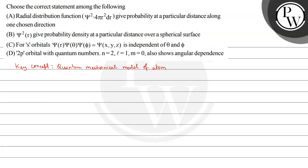The first statement says: radial distribution function chi-squared times 4 pi r-squared dr gives probability at a particular distance along the chosen direction. Now, chi-squared times 4 pi r-squared dr — according to the question it gives the probability at a particular distance along the chosen direction, but here direction is not specified. Moreover, the term 4 pi r-squared dr represents the probability on a spherical surface.